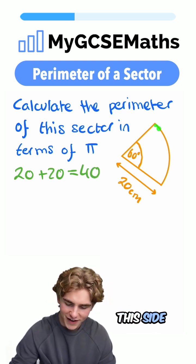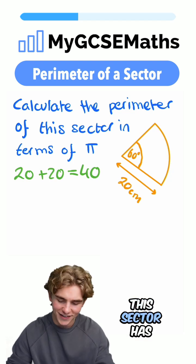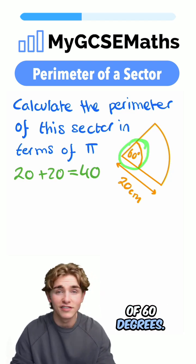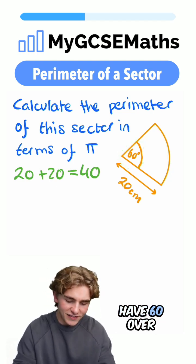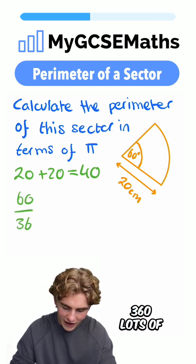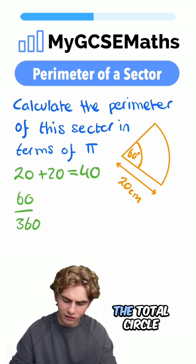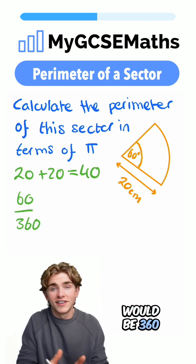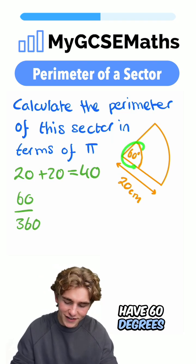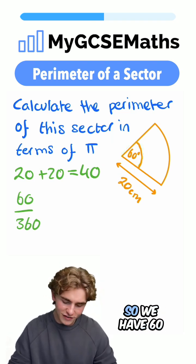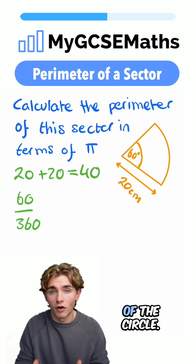Now, what about this side length here? We can see that this sector has an angle here of 60 degrees. So we effectively have 60 over 360 lots of our circle. Now, why is that? It's because the total circle would be 360 degrees, and we have 60 degrees of that 360, so we have 60 over 360 lots of the circle.